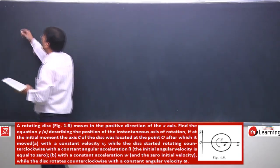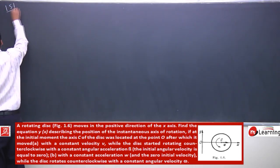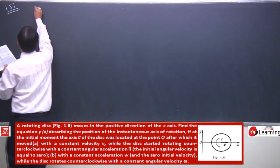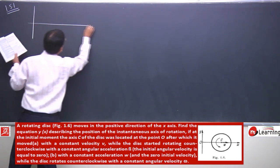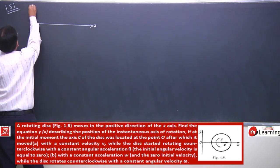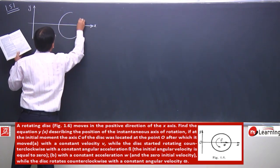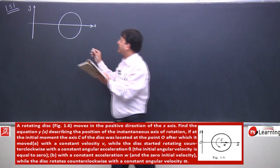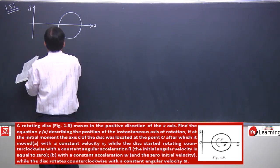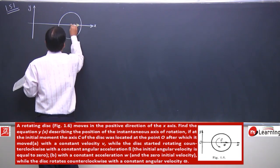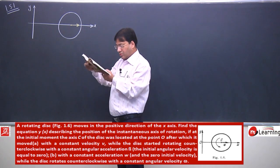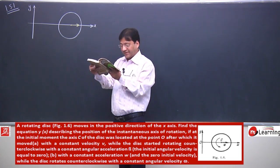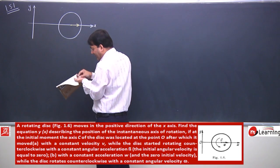Let me solve problem number 1.51 for you — a rotating disc. There is a figure given: a rotating disc along the xy plane moves in the positive direction of the x-axis. Find the equation y(x) describing the position of the instantaneous axis of rotation.